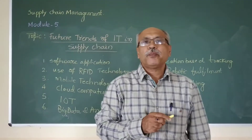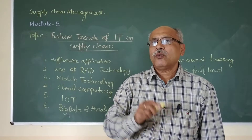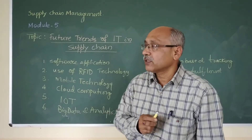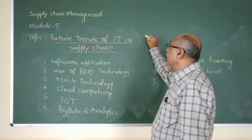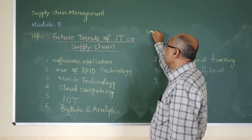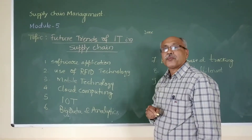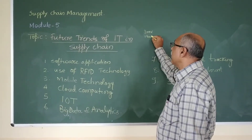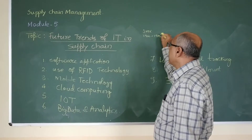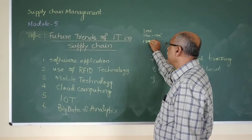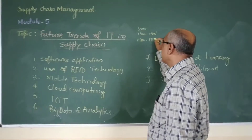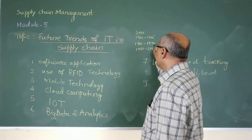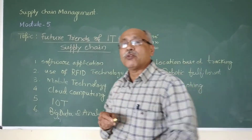In the first module, we had one discussion on revolutions in supply chain. If you recall, there were three revolutions. The first revolution took place during 1900, the second revolution during 1900 to 1920, and the third revolution from 1950 to 2000, or till today.